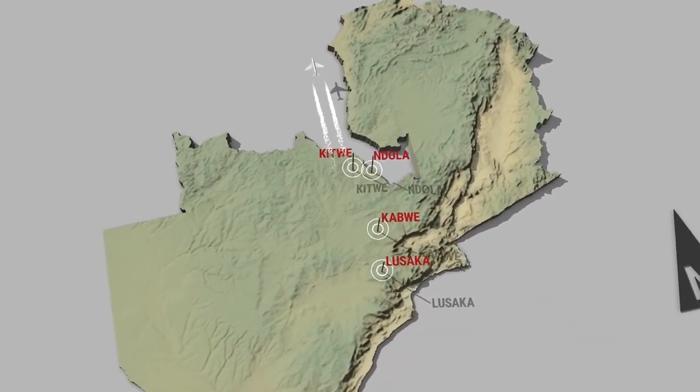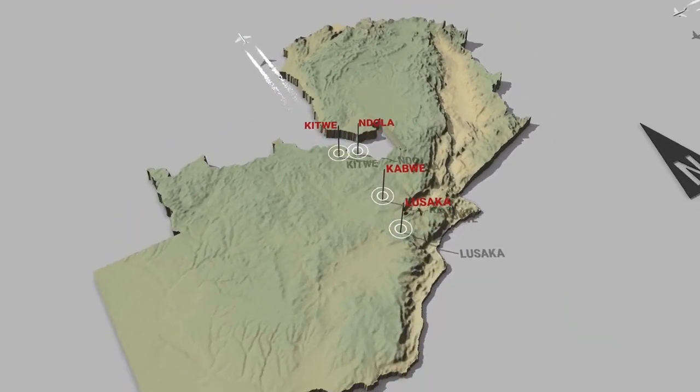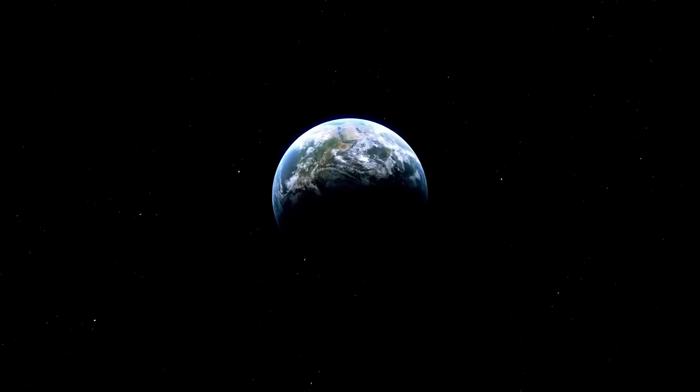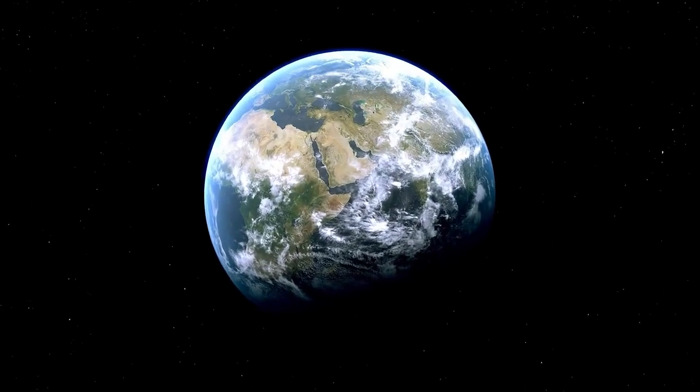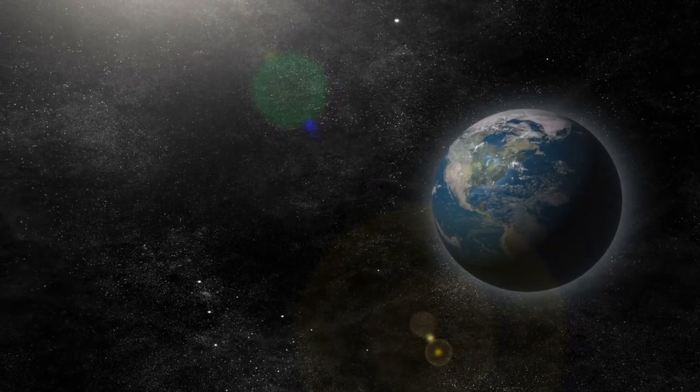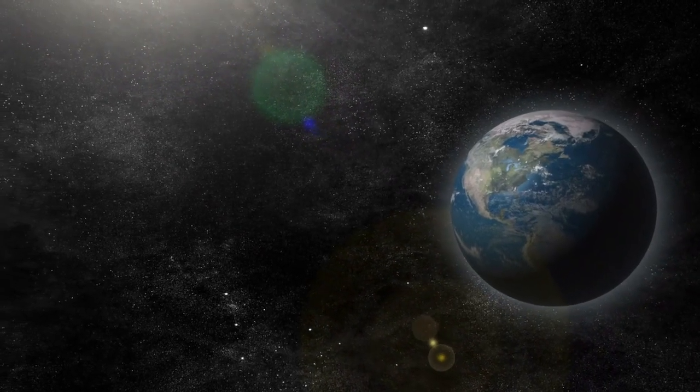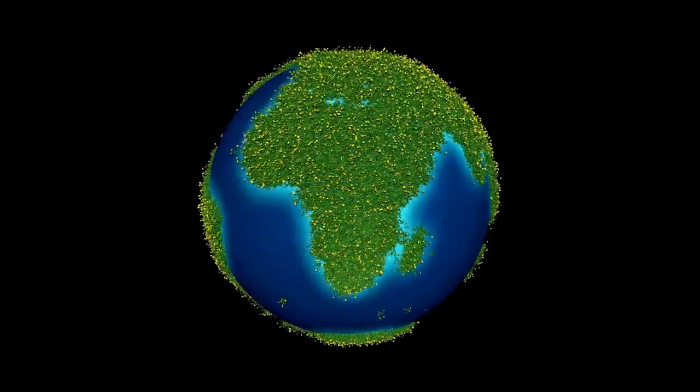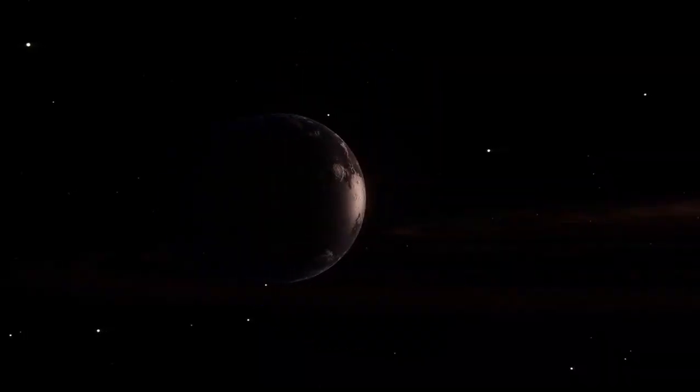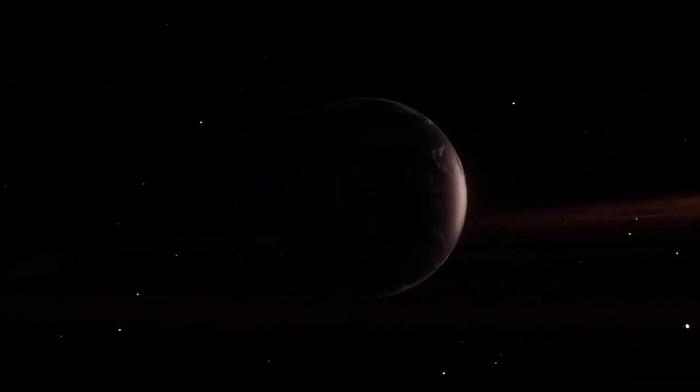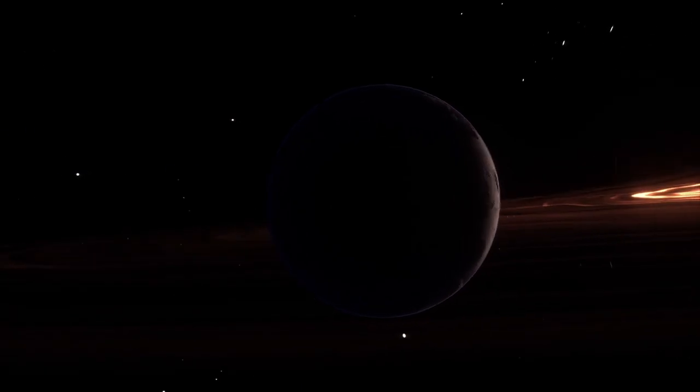If Betelgeuse is approaching this point, we may be witnessing some of the final warning signs. The ejection of gas, contraction of the core and resulting turbulence could all be contributing to this current surge in brightness. Alternatively, it might be another episode in the star's ongoing cycle of instability, but even that offers a wealth of new information.